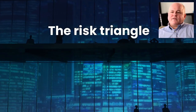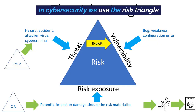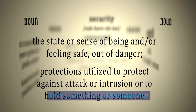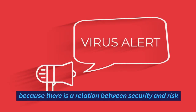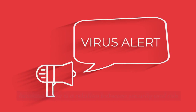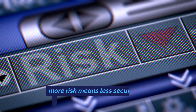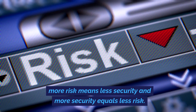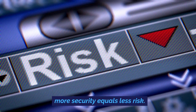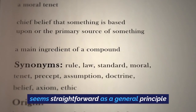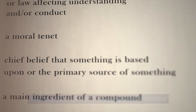The risk triangle. In cybersecurity, we use the risk triangle to help us better understand risk, because there is a relation between security and risk. Security is the opposite of risk — more risk means less security, and more security equals less risk. This seems straightforward as a general principle.